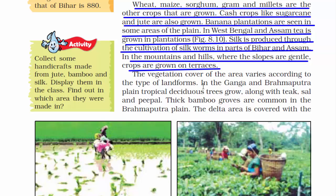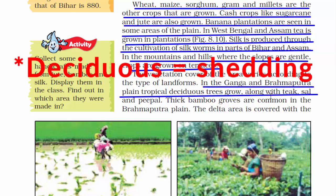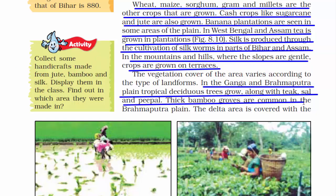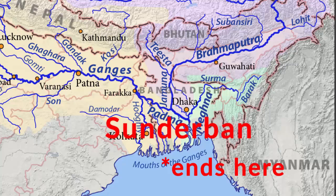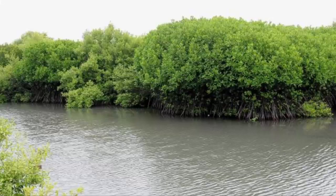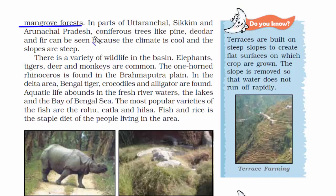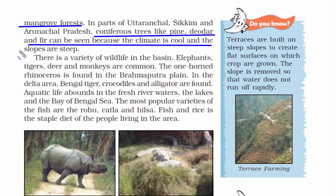In the Ganga and Brahmaputra plain, the kind of trees that grow are tropical deciduous — meaning trees that shed their leaves annually. Teak, sal, peepal, and thick bamboo trees are found. Towards their draining point, you will find mangrove forests. In the mountainous region where these rivers originate, you will find coniferous trees like pine, deodar, and fir, because of the cold climate, steep slopes, and terrain up there.